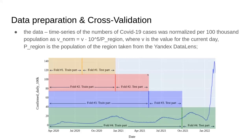How do we prepare our data? We normalize — we take confirmed cases in each region and normalize by population. All the timeline is split equally into five parts, and these five parts are used to form four folds which contain a training part and a test part. Test parts always have the same length, while the training part increases with each fold by one-fifth of the data, so we can see the dynamic of how the model behaves with such an increase.